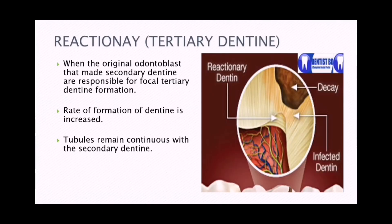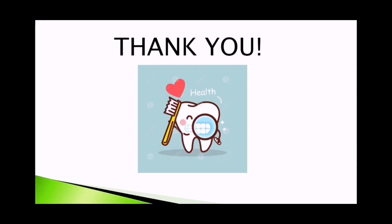Reactionary dentine, also known as tertiary dentine, is a type of dentine produced by the odontoblasts in response to any stimulus. When the original odontoblasts that make secondary dentine are responsible for focal tertiary dentine formation, the rate of formation is increased and the tubules remain continuous with the secondary dentine.